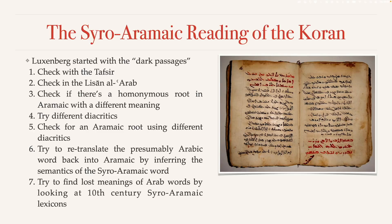If he still doesn't find anything, he turns to 10th-century lexicons used as translation aids for people translating old Aramaic texts into Arabic. By the 10th century, the Aramaic language was slowly dying out due to the Arabization policy in the caliphate. Many important scientific texts written in Aramaic could no longer be understood, so they had to be translated into Arabic, and for that purpose lexicons were created. In those lexicons one can find Arabic definitions for Syro-Aramaic words, which can help understand what the Quran actually meant.